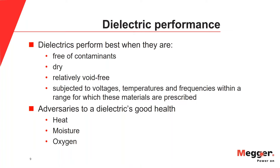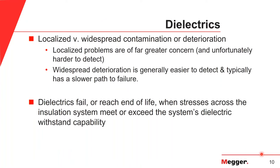Dielectrics work best when subjected to voltages and temperatures within the range for which these materials are prescribed. The major enemies that undermine an insulating material's continued good performance are temperature, water, and oxygen. Areas of localized overheating can sometimes result in a localized dielectric problem where materials throughout the rest of the system can retain their starting properties. Localized problems are a far greater concern than widespread deterioration, but unfortunately they are much harder to detect. Dielectrics fail when the stresses across the insulation system meet or exceed the system's dielectric withstand capability.